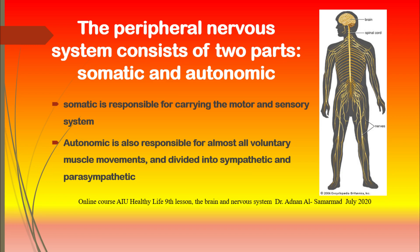The main function of neurons is to transmit instructions to the central nerve system, called afferent, and from the central nerve system, called efferent. This happens through two main types of neurons: motor neurons and sensory neurons.